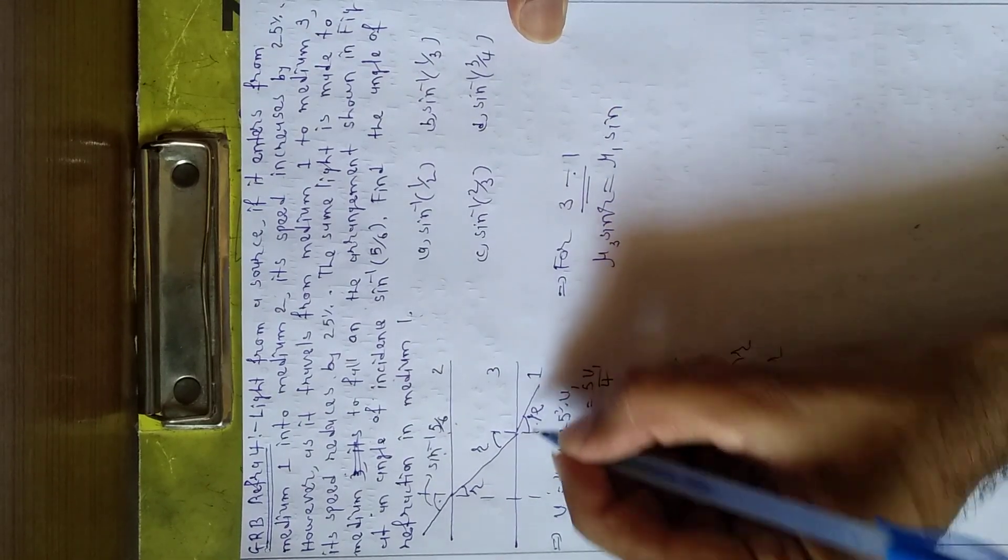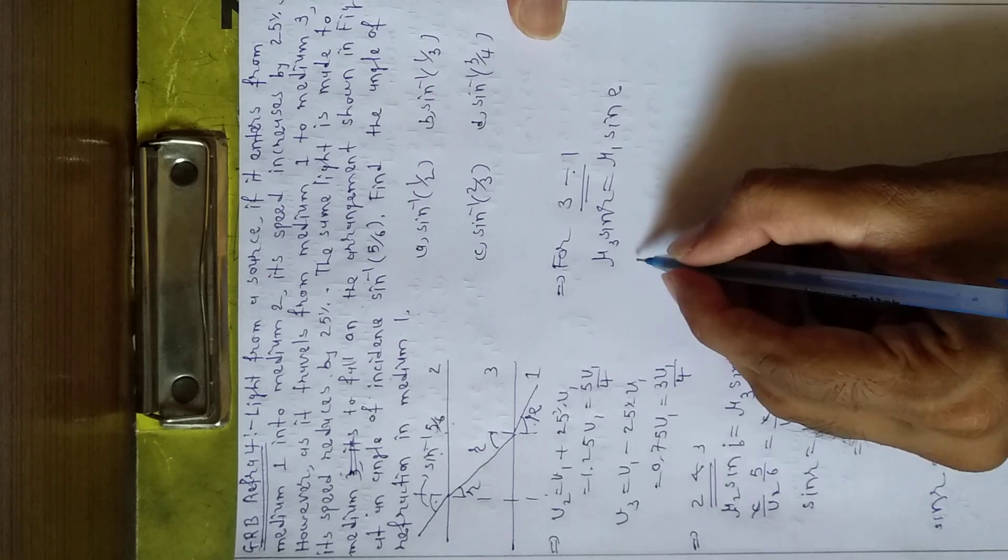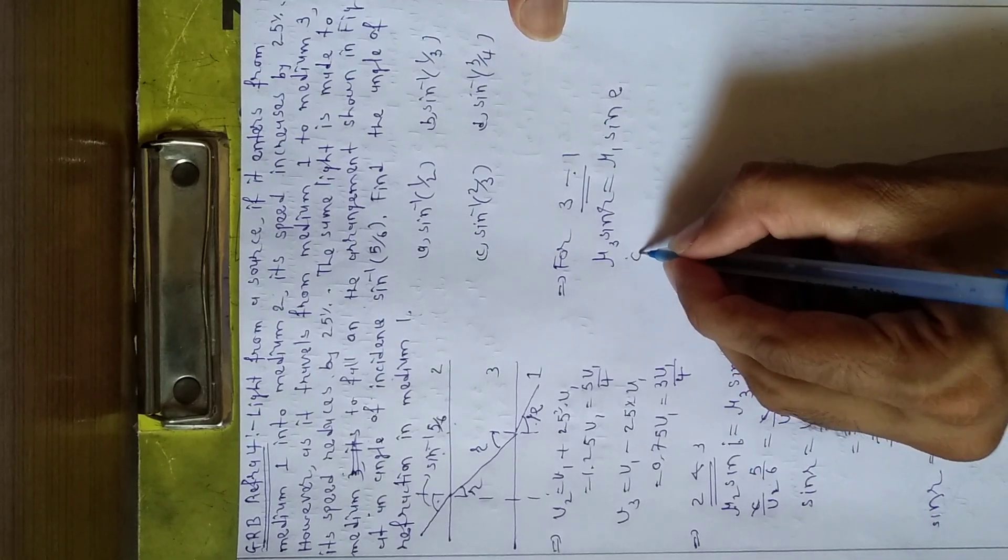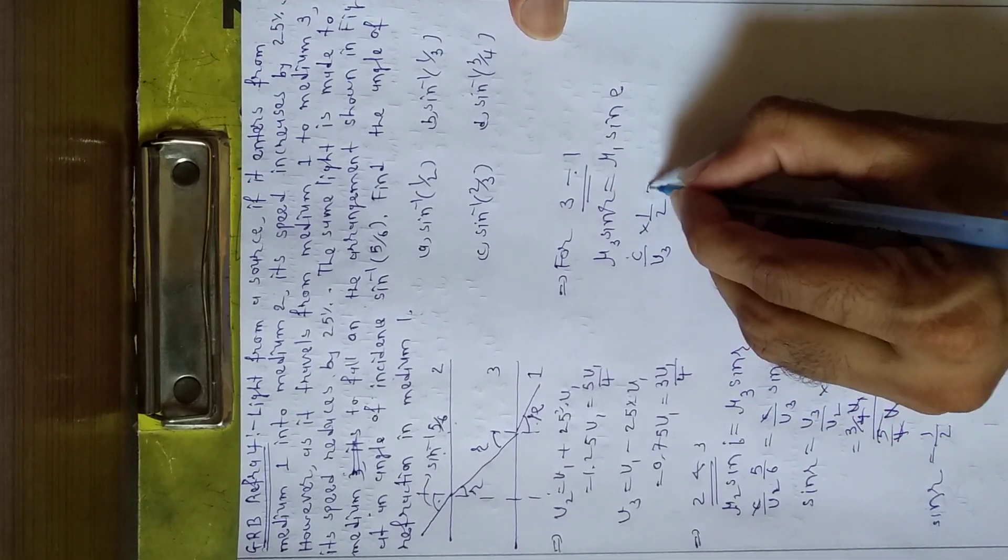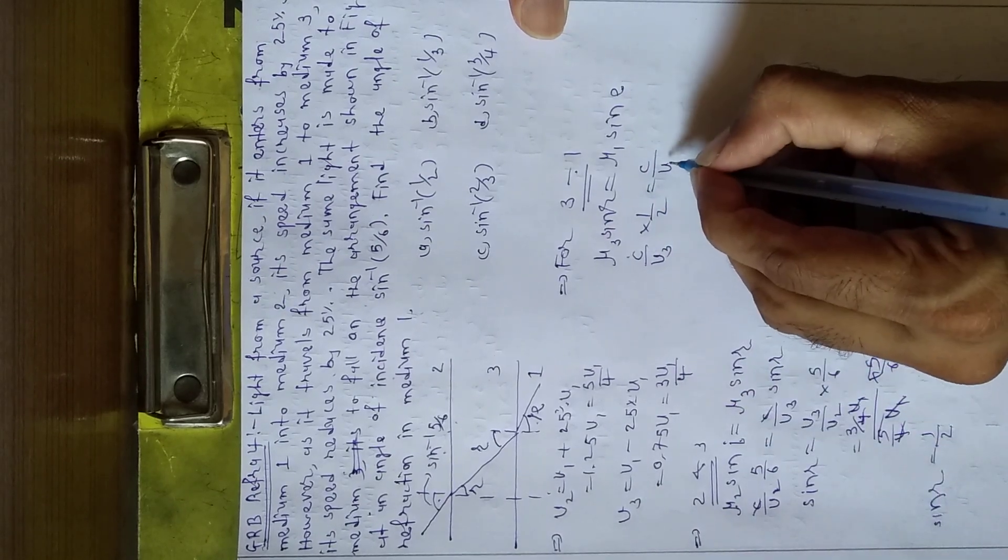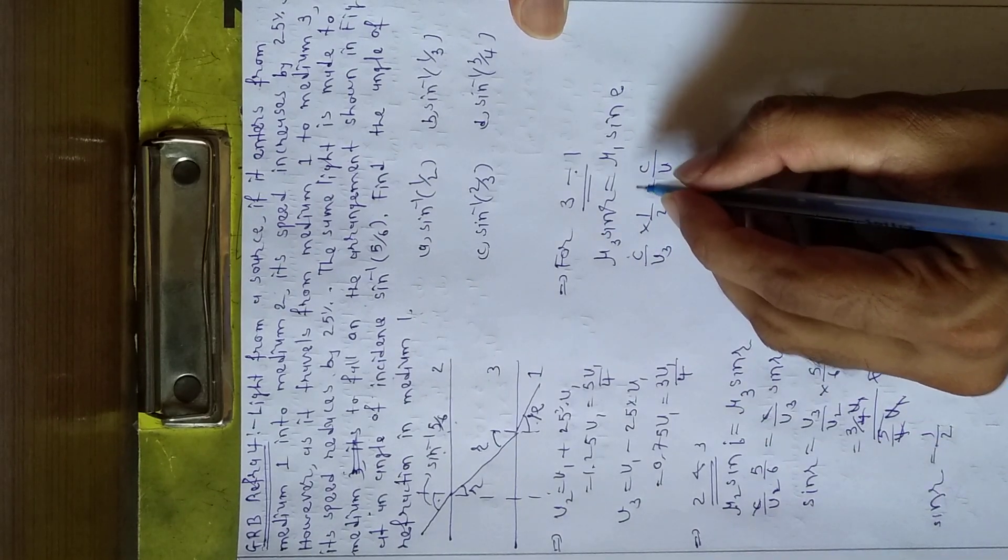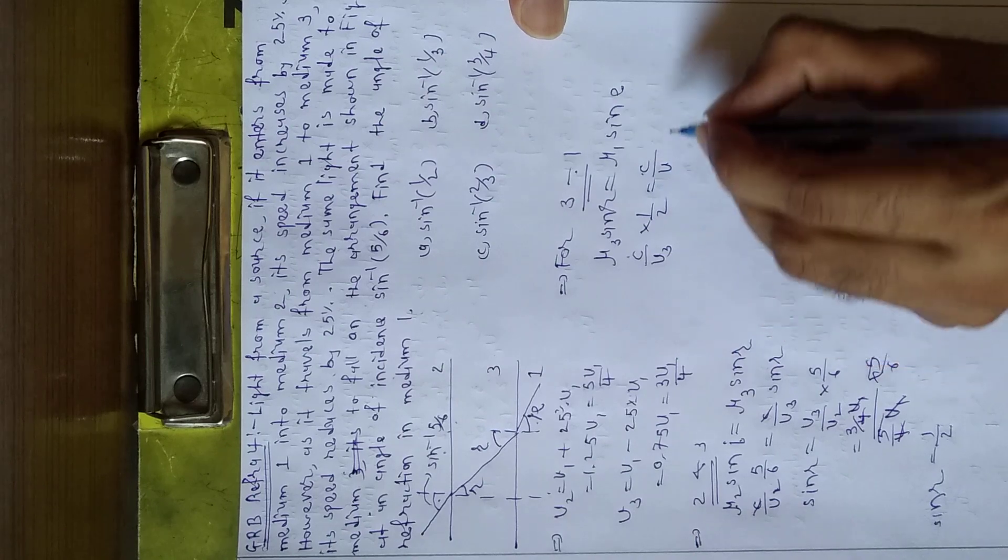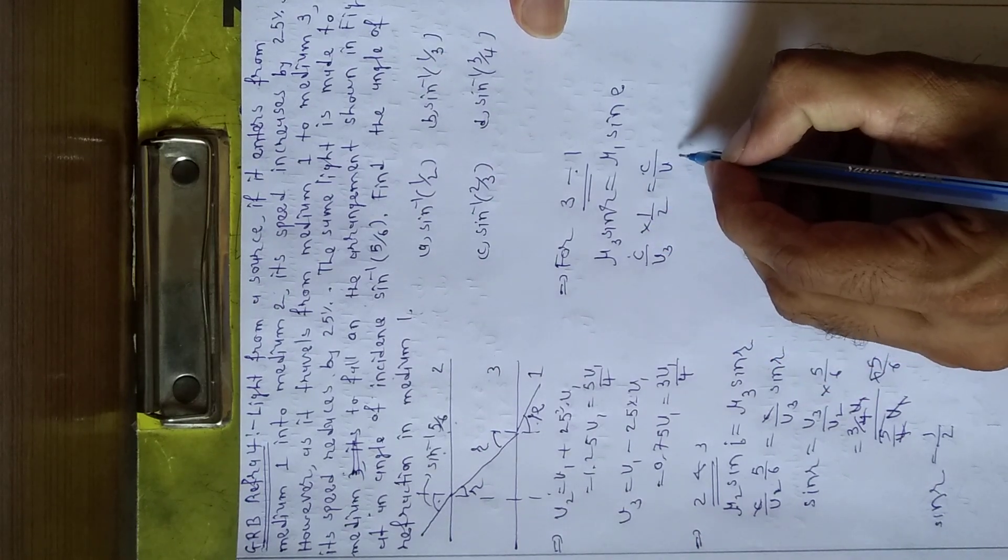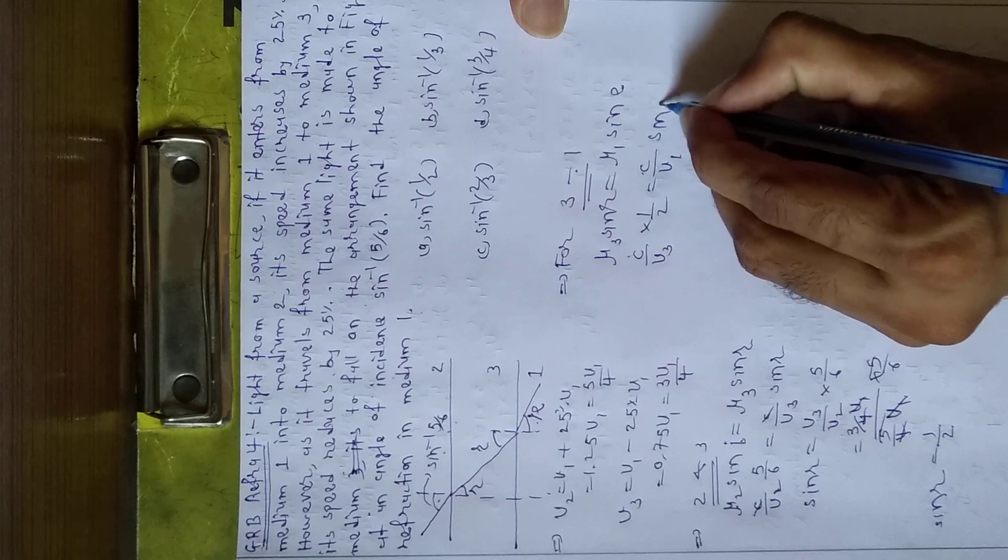Mu 3 equals c by v3, sin r equals 1 by 2, mu 1 equals c by v1, sin e. We need to find the refractive index.